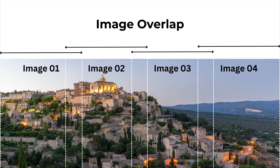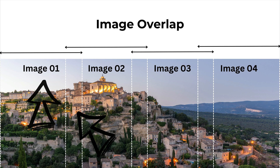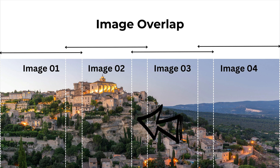When it comes to shooting panoramas, one of the most important things is image overlap. Depending on the resources, you will see information mentioning 20%, 30%, or even 50% overlap on images. This depends on the lens, the scene, the landscape, the technique, and how far or close the subject is to the camera. As a starting point, I suggest using 30% overlap on your images. You can see how each image overlaps with the next — start with 30% and work from there.